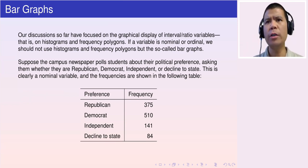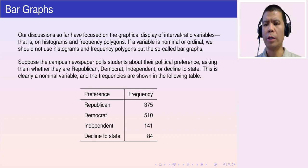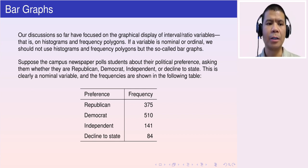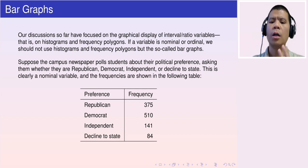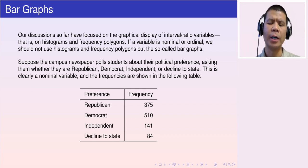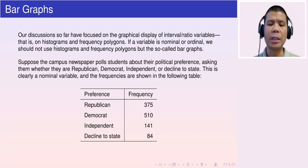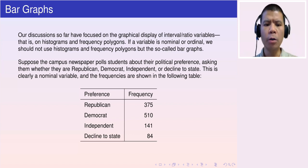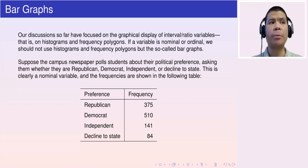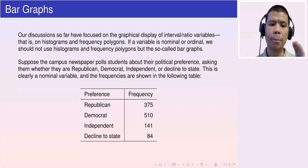Now, what if a variable is nominal or ordinal level — like color, occupation, or occupation rank? For these types of data, the difference does not make sense, so we cannot use a frequency distribution table, histogram, or frequency polygon. Those cannot be used to draw graphs for such data. Here we are going to use bar graphs.